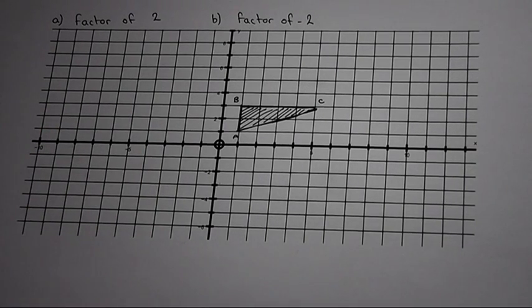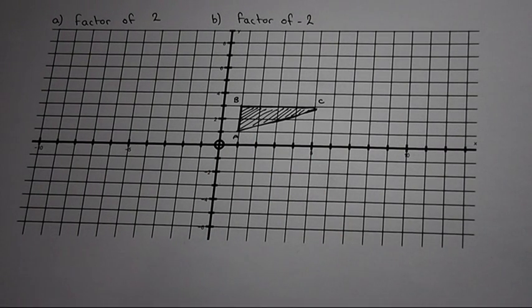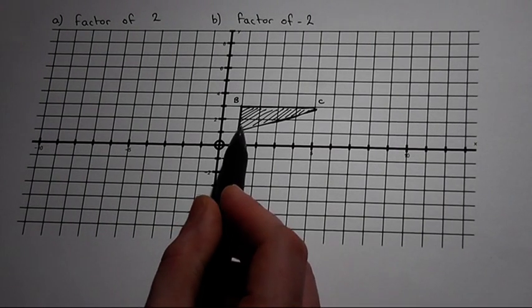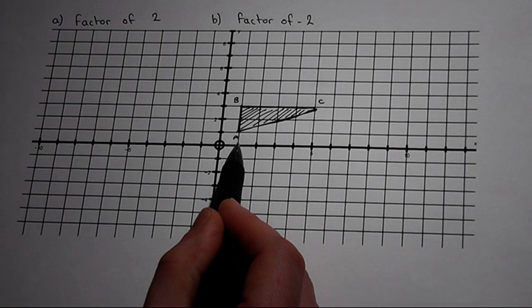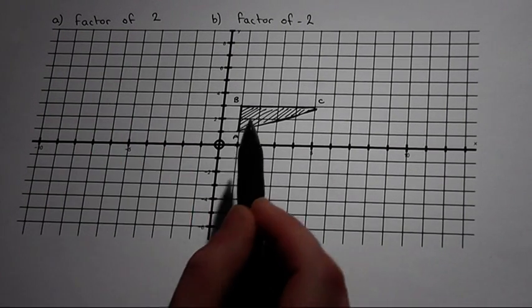To do the positive scale factor, we go through each coordinate in turn and ask ourselves the following question: how do we get from the origin to the coordinate? We go across one, up one. So to enlarge by a factor of two, we double this.